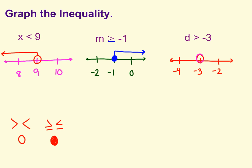The only time you fill in your circles, it has that or equal to bar. And then D is greater than negative 3, so you want to shade all the values that are bigger than negative 3, which will be to the right.